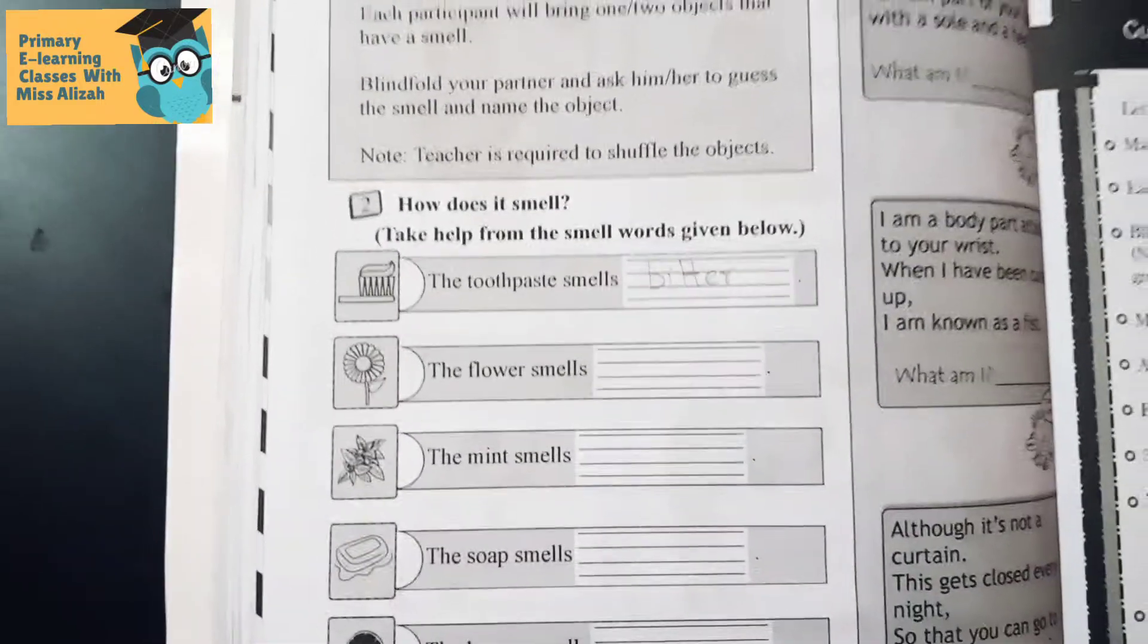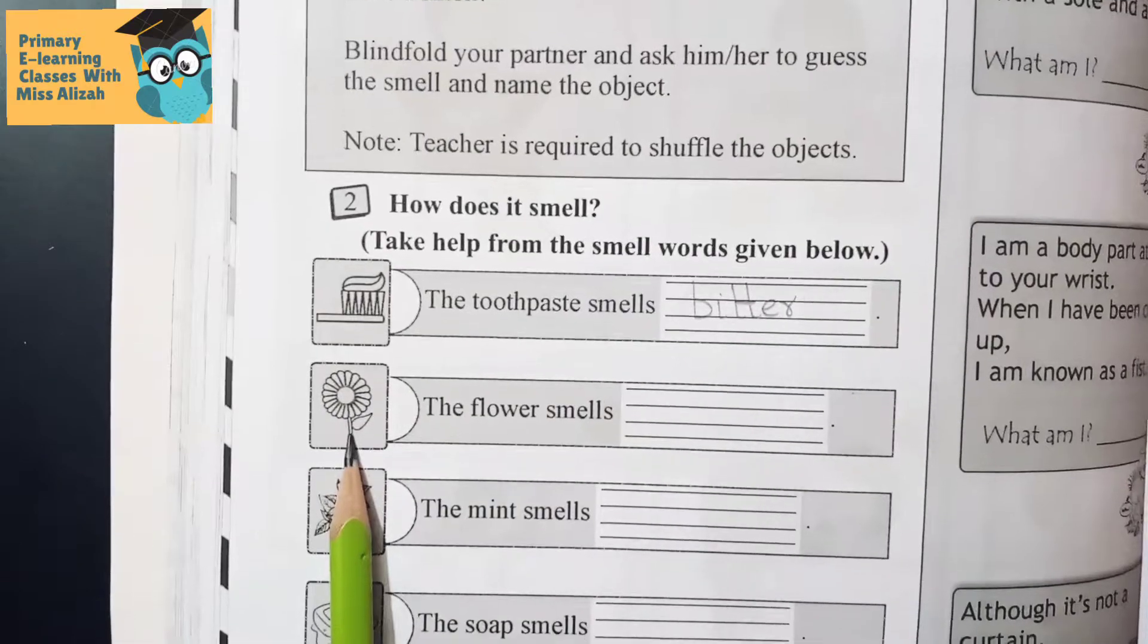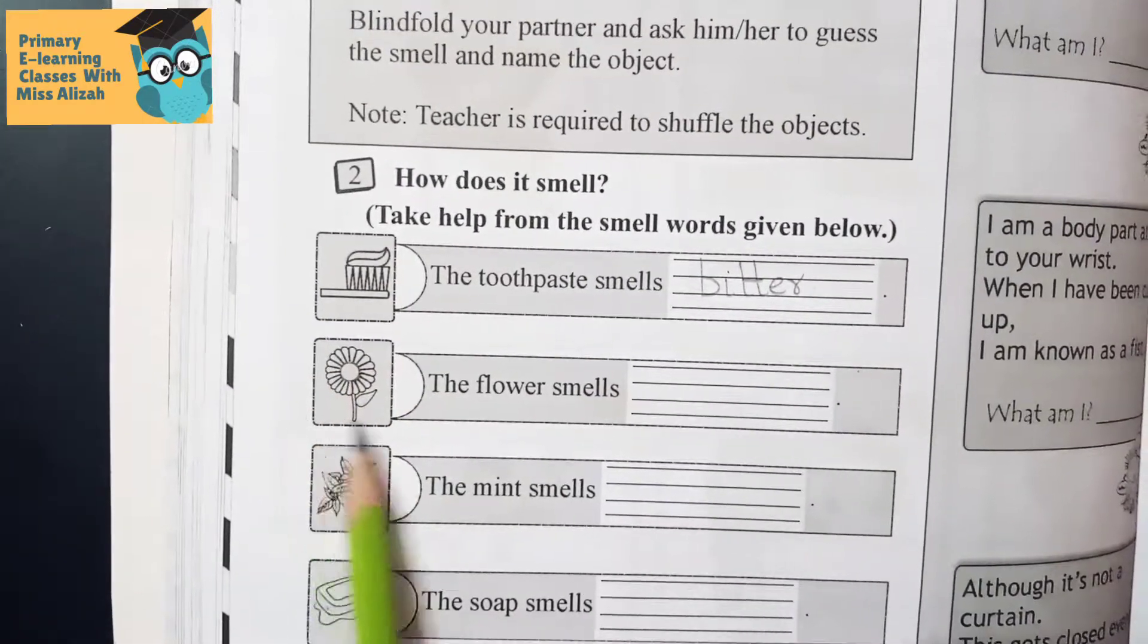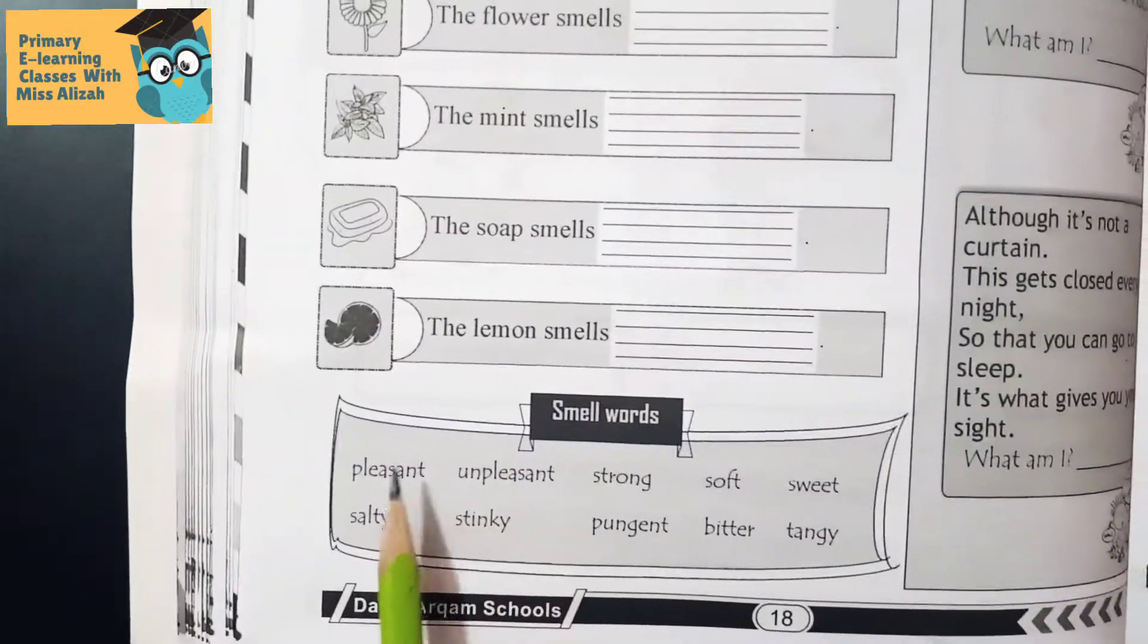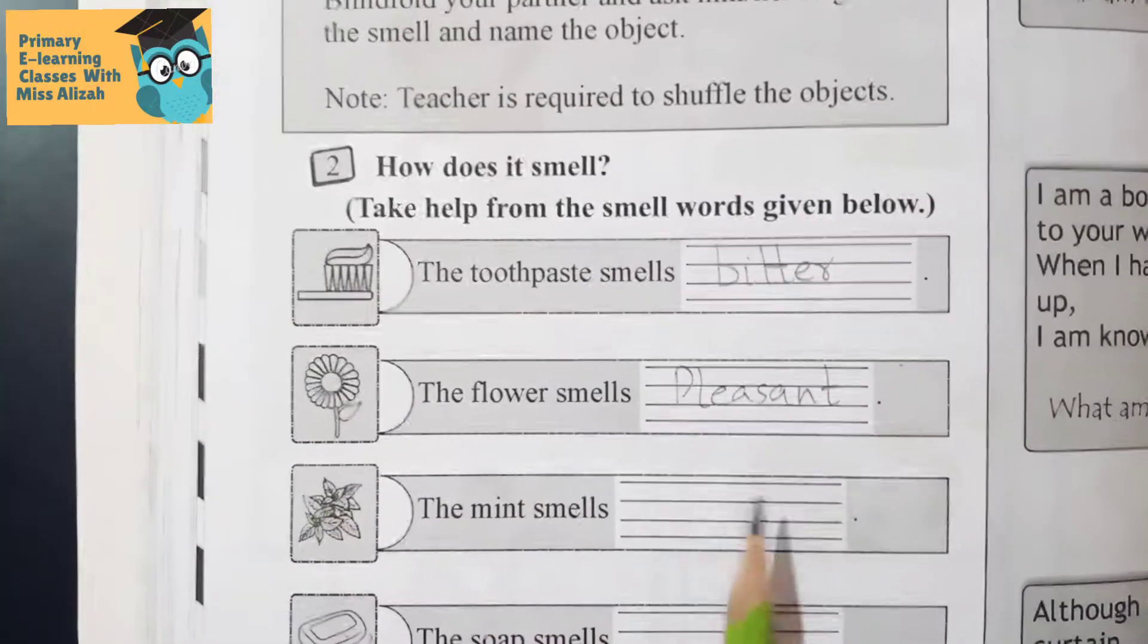Alright, the next one we have is flower. Flower ki kaisi smell hoti hai? The flower smells bohut piari si khushbu hoti hai na. So the flower smells pleasant. You have to write pleasant over here.